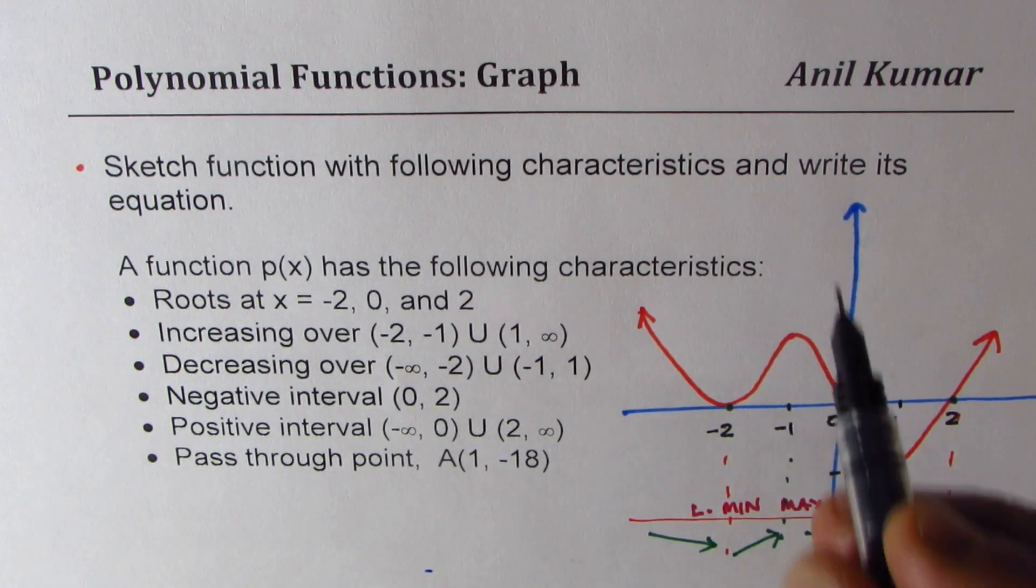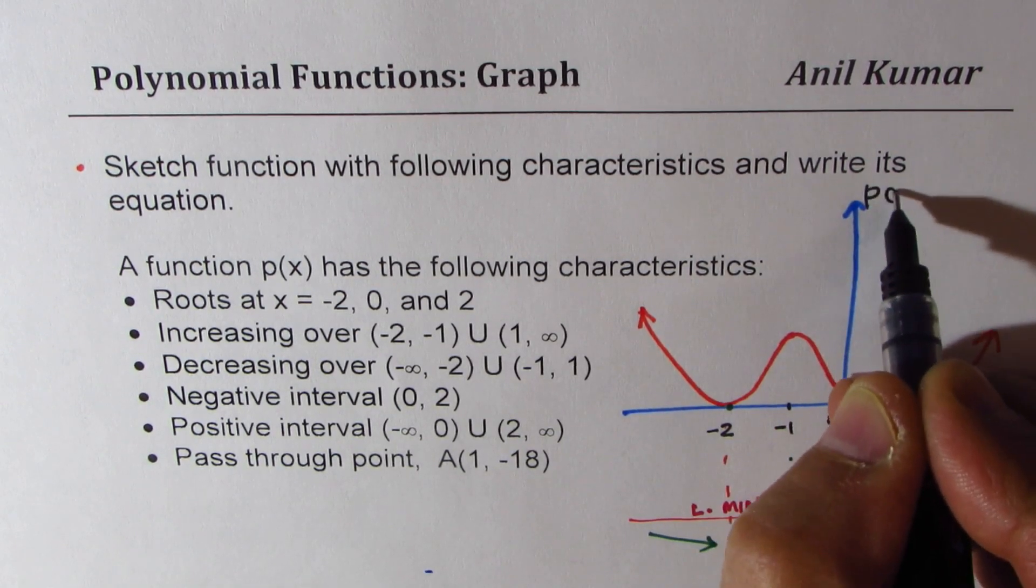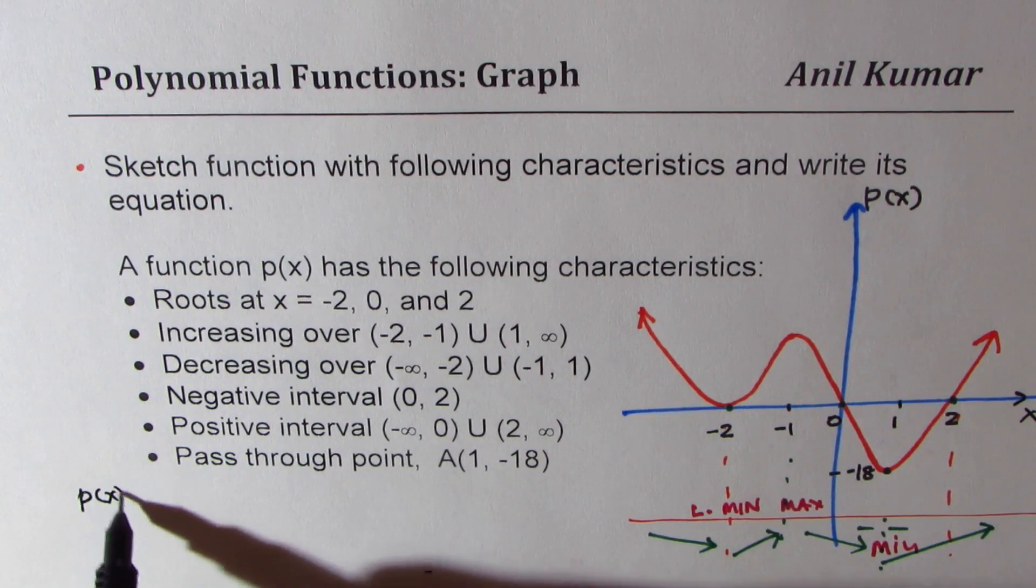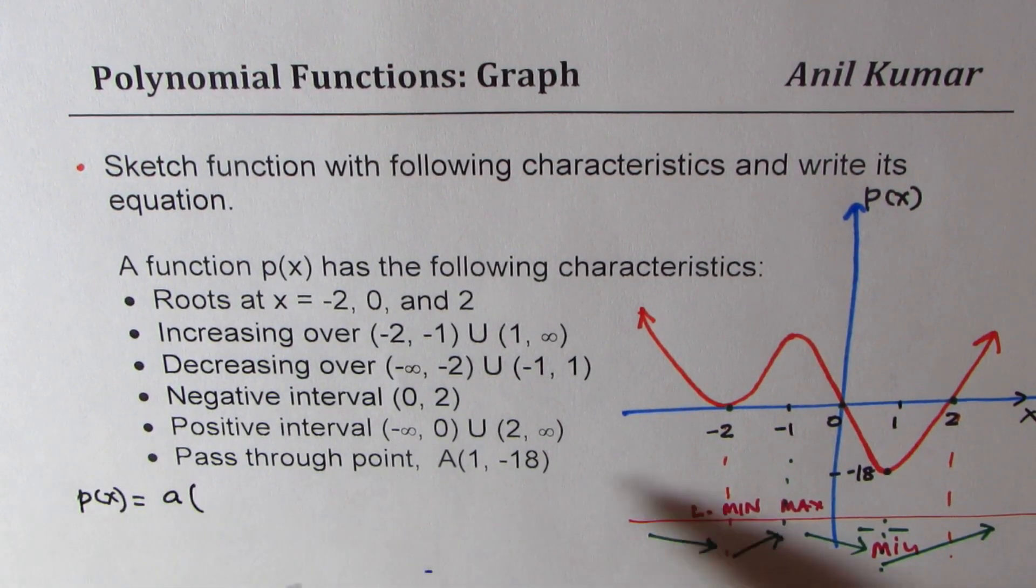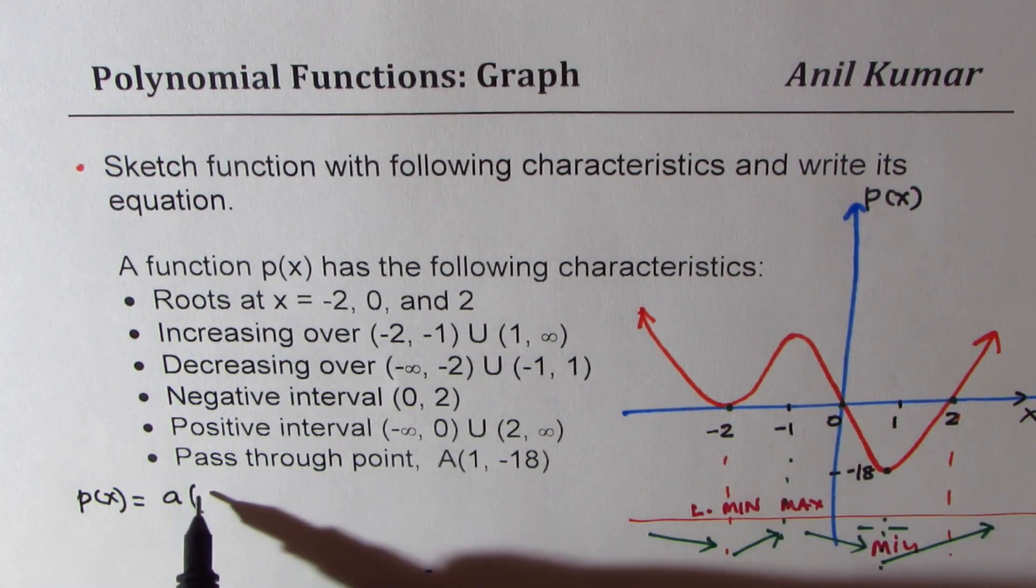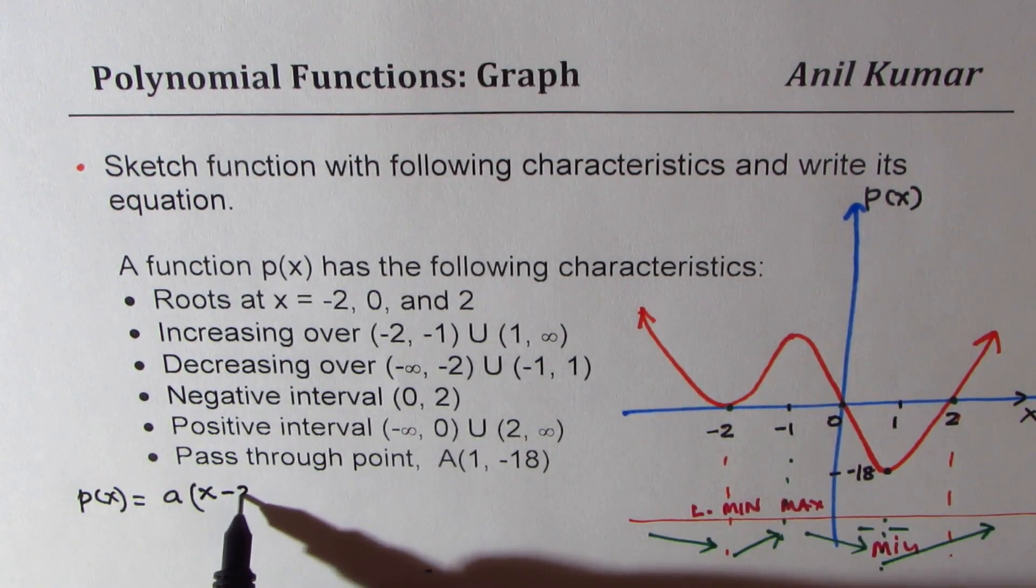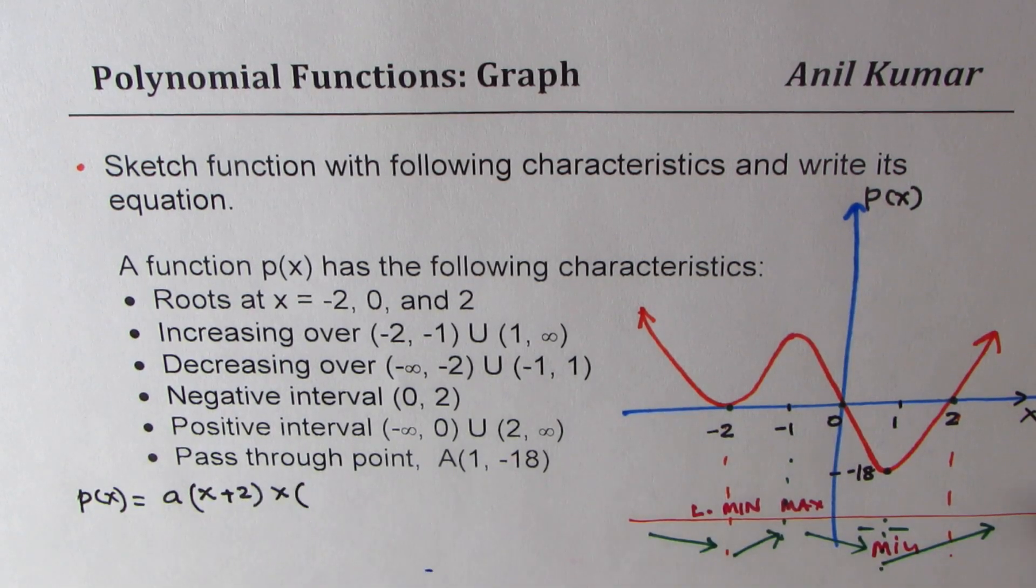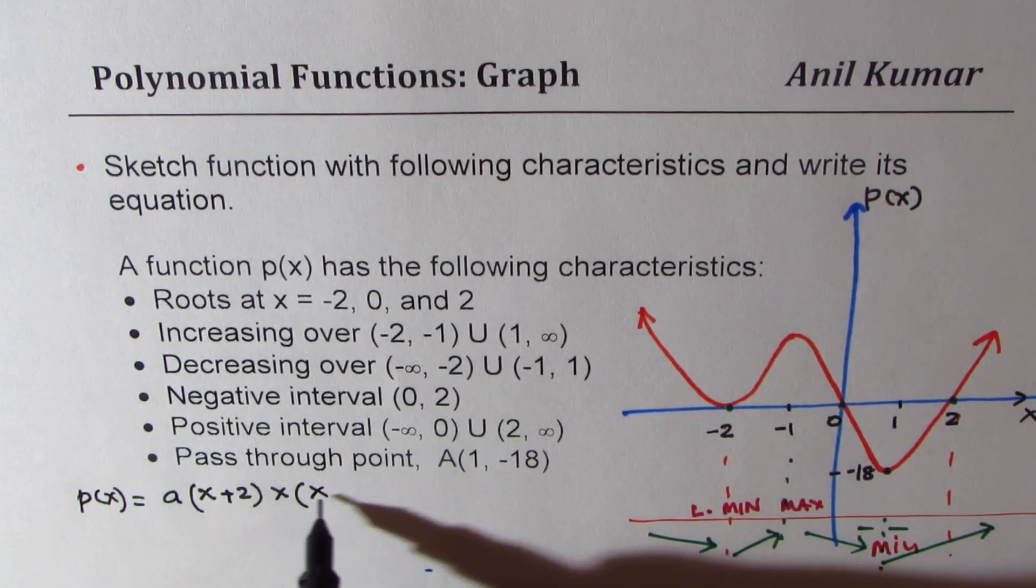So for this polynomial, which is referred to as p(x), we can write the equation. So p(x) should be equal to a times, one root is at 0, this is x minus 2, so we have x times (x + 2) times (x - 2).